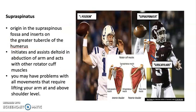The supraspinatus muscle originates in the supraspinous fossa, as shown here, and inserts onto the greater tubercle of the humerus. It initiates and assists the abduction of the arm — in other words, takes the arm away from the body — but it does only the first 15 to 20 degrees of abduction. It acts like a starter, because the primary muscle for abduction of the arm is the deltoid muscle, which does not belong to the rotator cuff muscles.